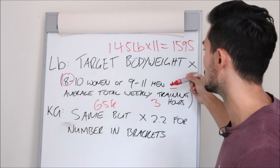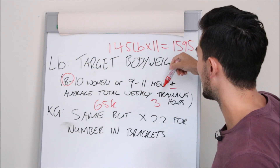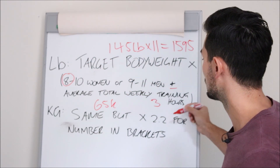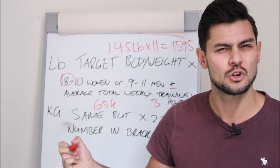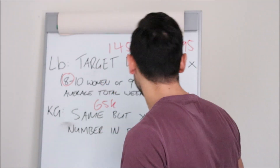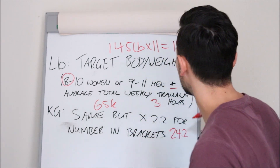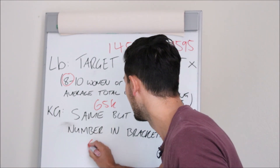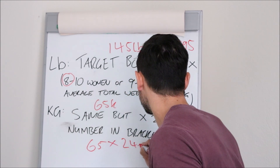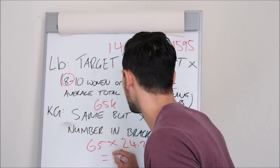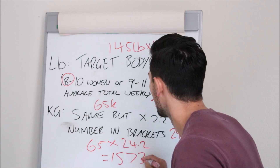So for the same person, we would do 11 times 2.2 — I just checked, it's 24.2. See, I'm good at maths. So then it's 65 times 24.2, and it equals something like 1,573 calories.